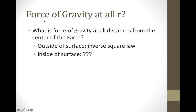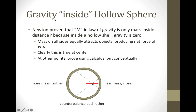Next, what is the force of gravity at all distances? Above the surface it follows the inverse square law. What about inside the surface of the Earth? Newton derived and proved the following theorem: for a force following an inverse square law, if you're inside a hollow sphere of mass M, the gravity inside the sphere is zero, while the gravity outside follows the inverse square law. When you're inside the sphere, you have mass above, below, and all around you pulling you away from your point, and all of those forces add up to zero.